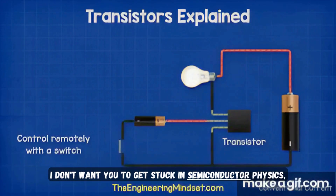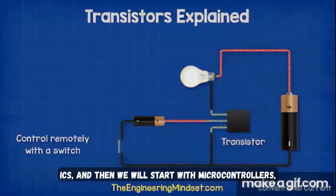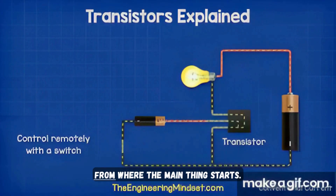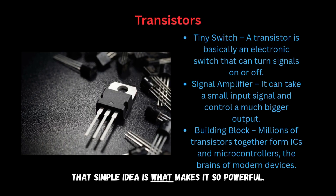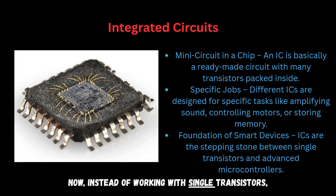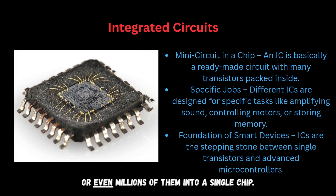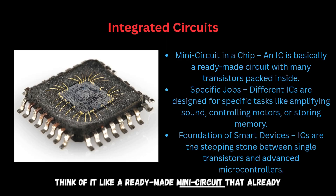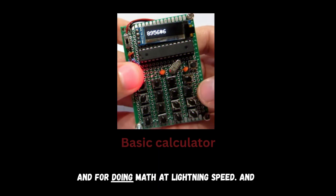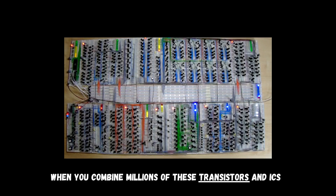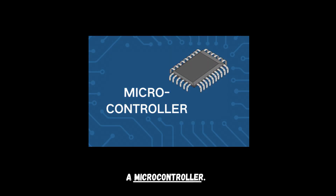I don't want you to get stuck in semiconductor physics, so I'll just give you a brief about transistors and ICs, and then we'll start with microcontrollers, where the main thing begins. A transistor is basically a tiny electronic switch that can take a small signal and use it to control a much larger signal — that simple idea is what makes it so powerful. Instead of working with single transistors, engineers combine thousands or even millions of them into a single chip, which we call an IC, or integrated circuit. Think of it like a ready-made mini circuit that already knows how to do a specific job — for example, ICs for amplifying sound, controlling motors, memory storage, and doing math at lightning speed. And when you combine millions of these transistors and ICs together, you get something even smarter: a microcontroller.